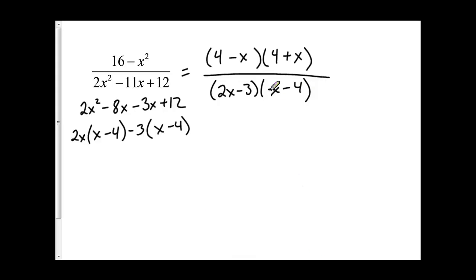Now you'll notice I have two that are similar. I've got an x minus 4, 4 minus x. They're not exactly the same, though. So what I'm going to need to do in order to make 4 minus x the same as x minus 4 is I'm going to factor out a negative 1. If I factor out a negative 1, this becomes negative 4 and this becomes positive x, which is the same as x minus 4.